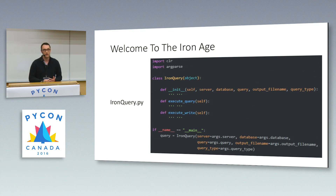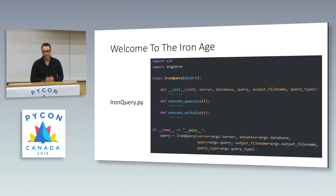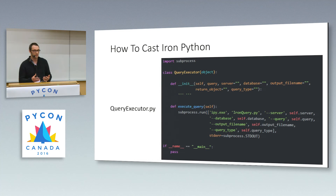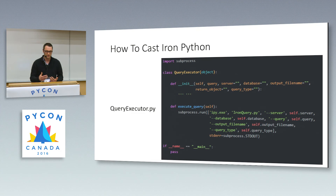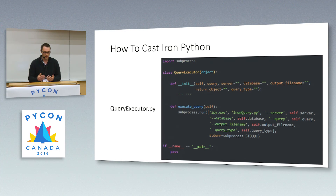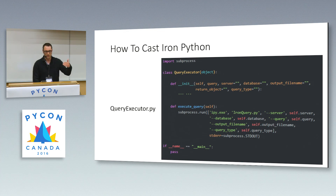It has two simple methods: executing the query and executing a write. Both handle the connectivity and error handling, and this script is called using command line arguments. The reason we communicate over command line arguments is because we have a separate library written in traditional CPython 3.5 that initializes mostly the same signature. In order for it to actually execute that query in IronPython, we use subprocess and kick off that query via subprocess.run, and the returned object is given back to the query executor file so we can use that query executor class in our regular Python workflow.